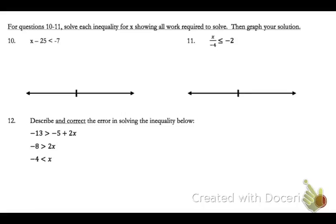We look at what's happening to x on number 10. 25 is being subtracted, so we're going to do the opposite. We're going to add 25 to both sides, just like we would if it were an equation. So we'd get x is less than negative 7 plus 25 is 18. So our answer is all the numbers less than 18.